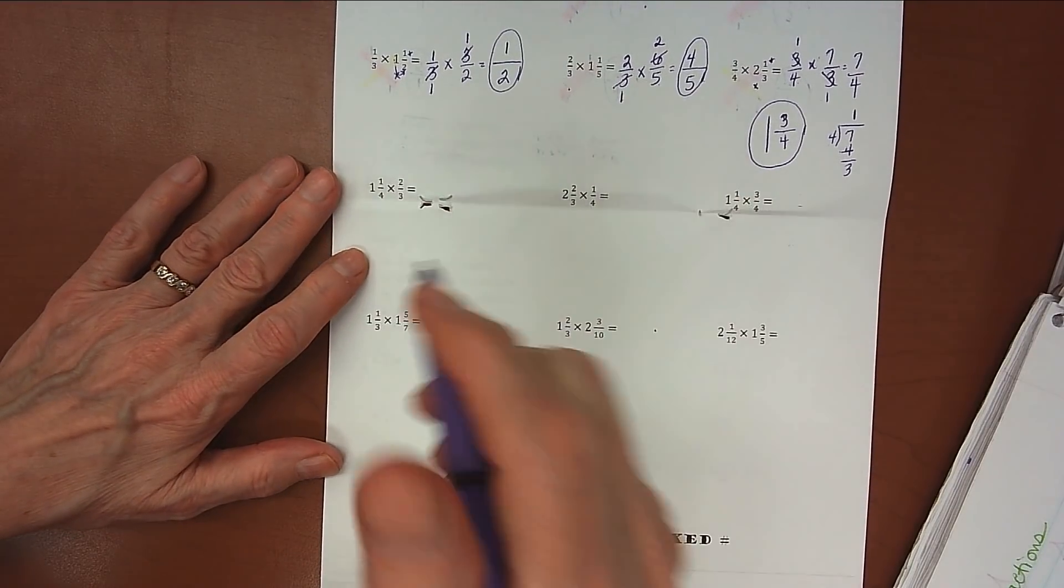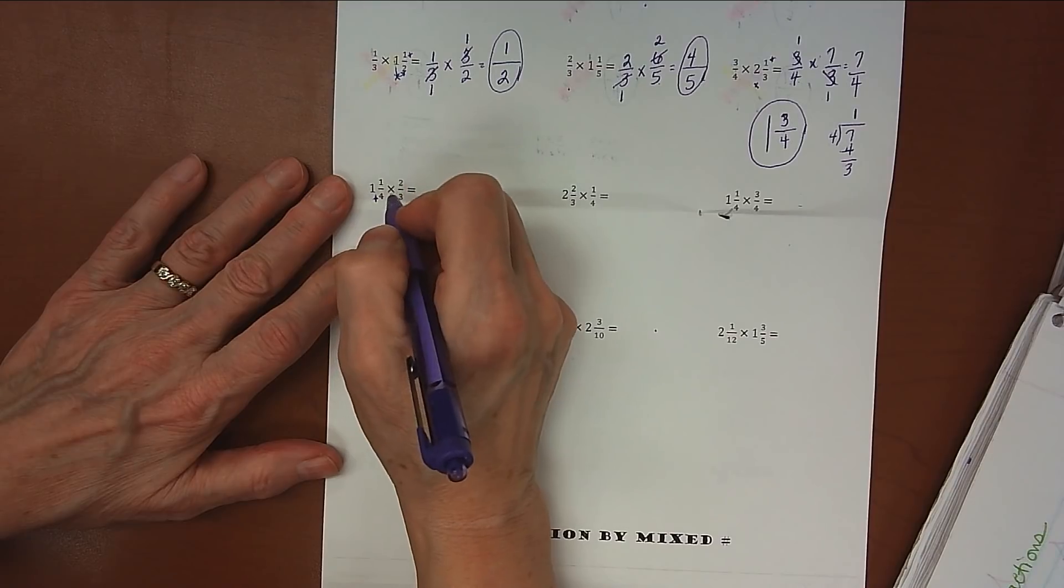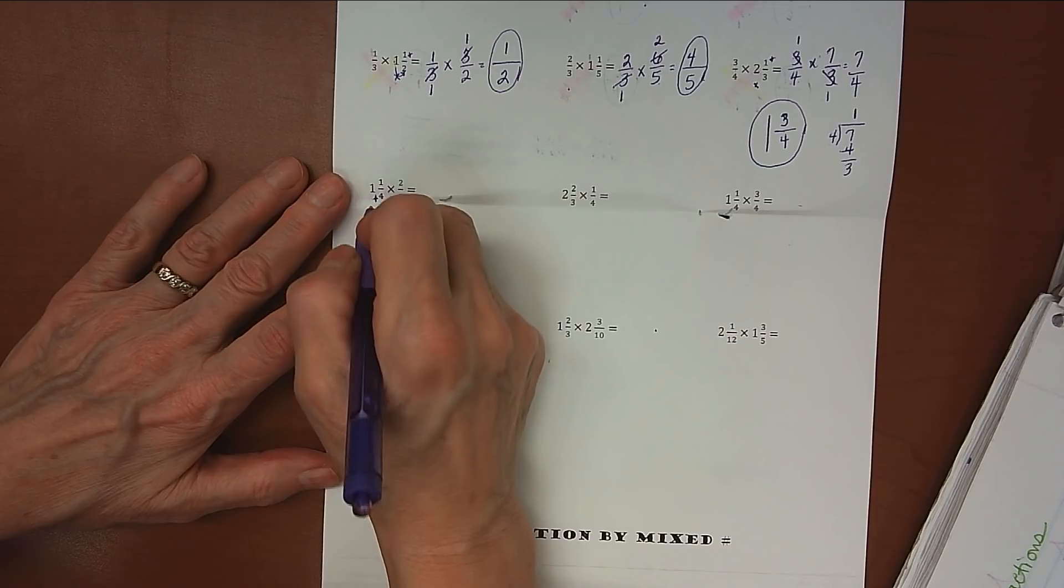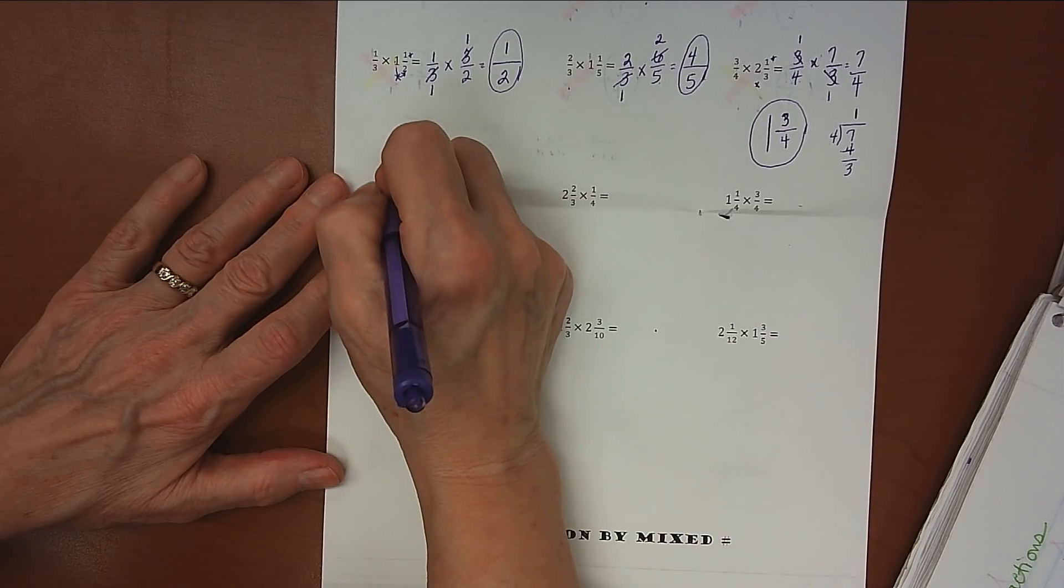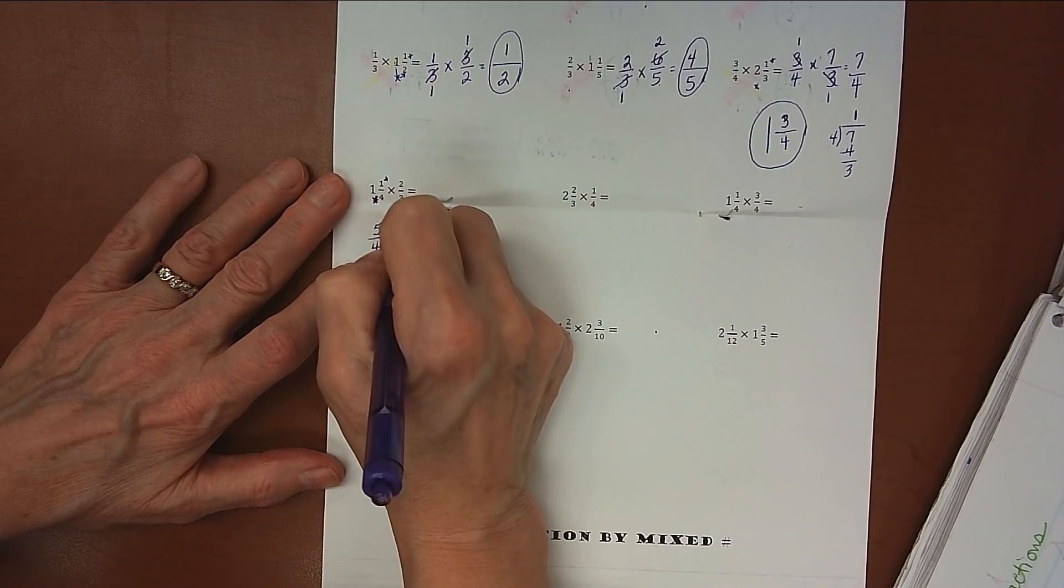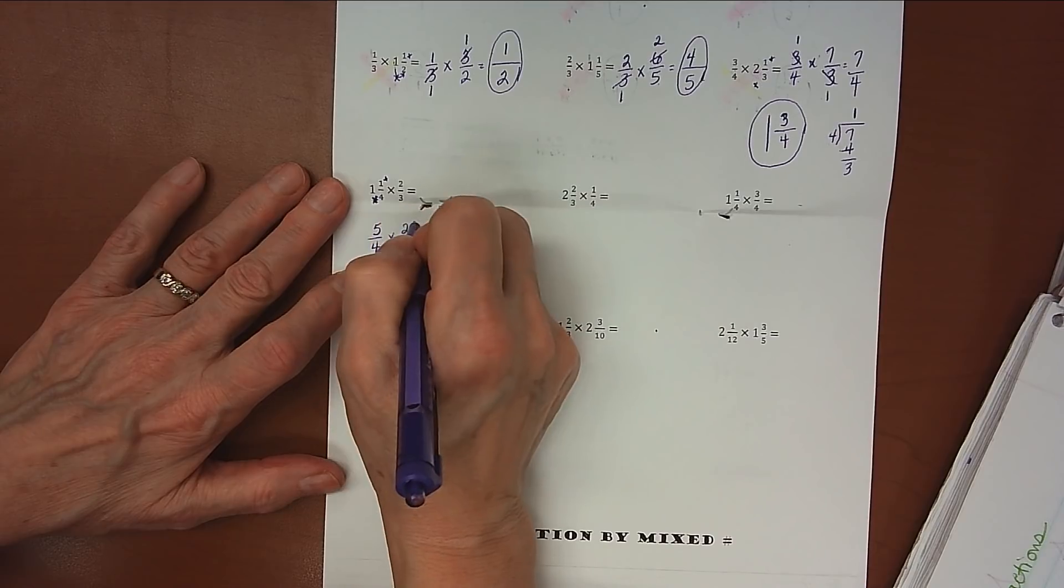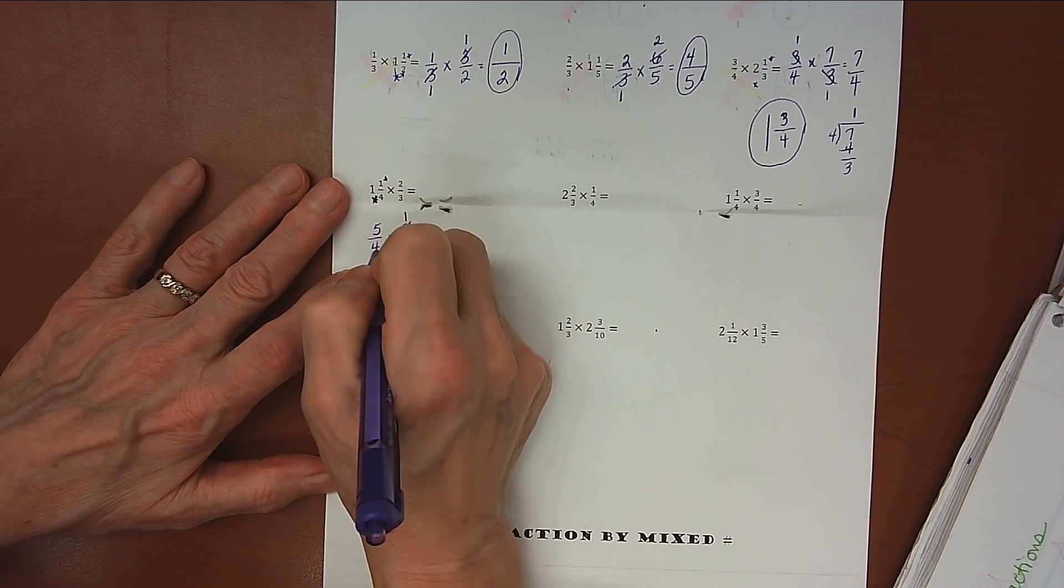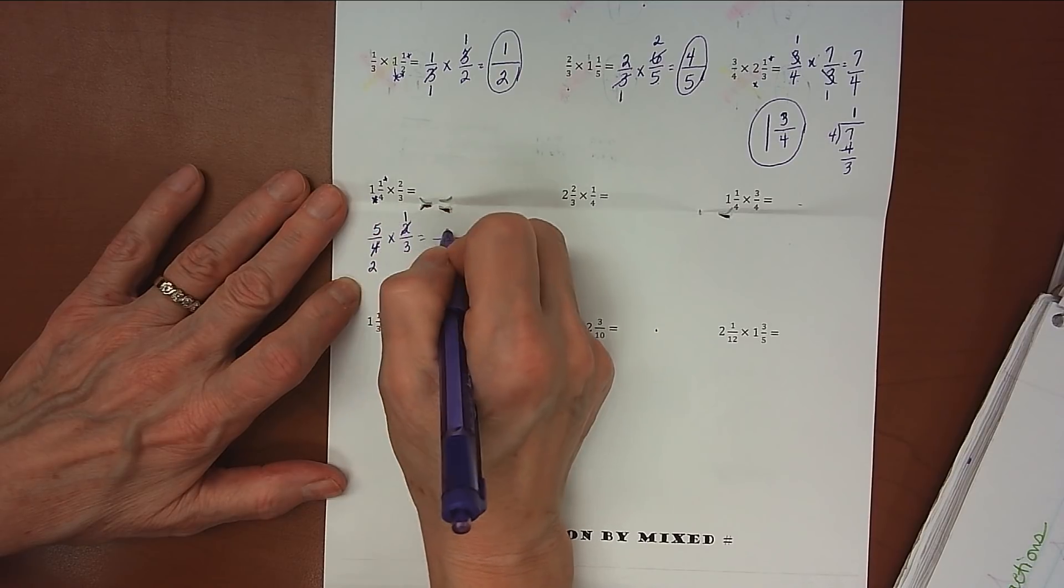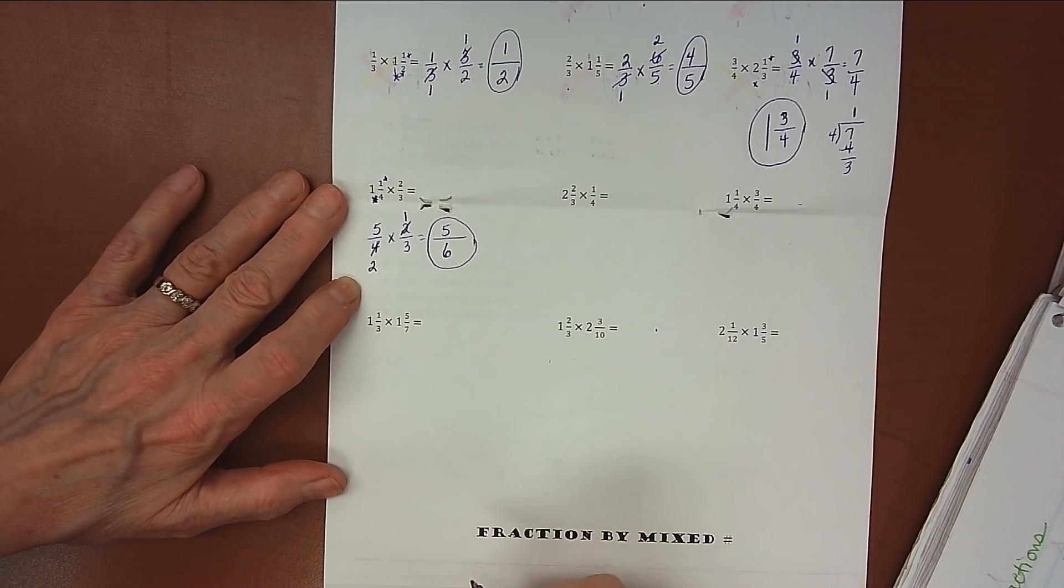1 and 1/4 times 2/3. So this is our improper fraction. We need to change this mixed number to an improper fraction. 1 times 4 is 4, plus 1 is 5, so that's 5/4 times 2/3. Look for opportunities to cross-simplify. These can both divide by 2, so 2 divided by 2 is 1, 4 divided by 2 is 2. Multiply. 5 times 1 is 5, 2 times 3 is 6. Lowest terms, not an improper fraction. Done now.